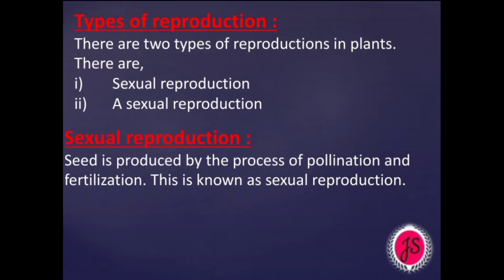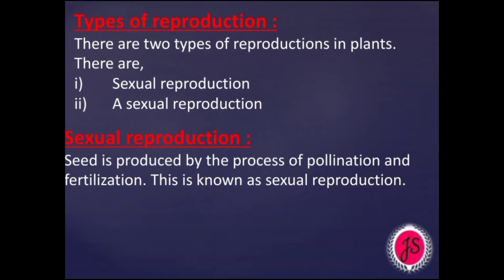One is Sexual Reproduction and another one is Asexual Reproduction. Asexual means absence of sex — no involvement of two sex organs. In Sexual Reproduction, seeds are produced by the process of pollination and fertilization.